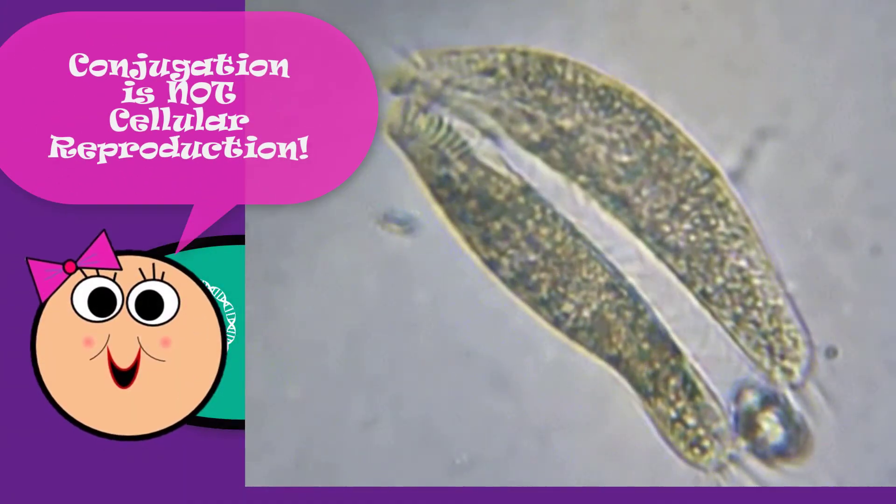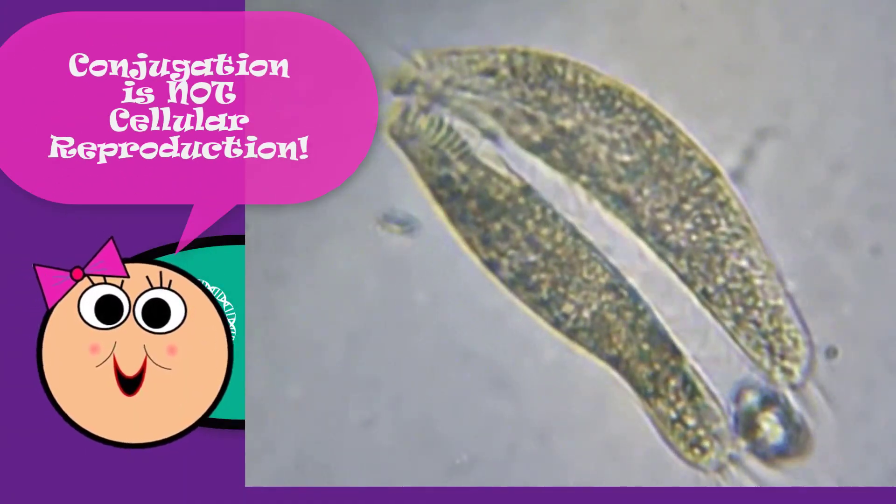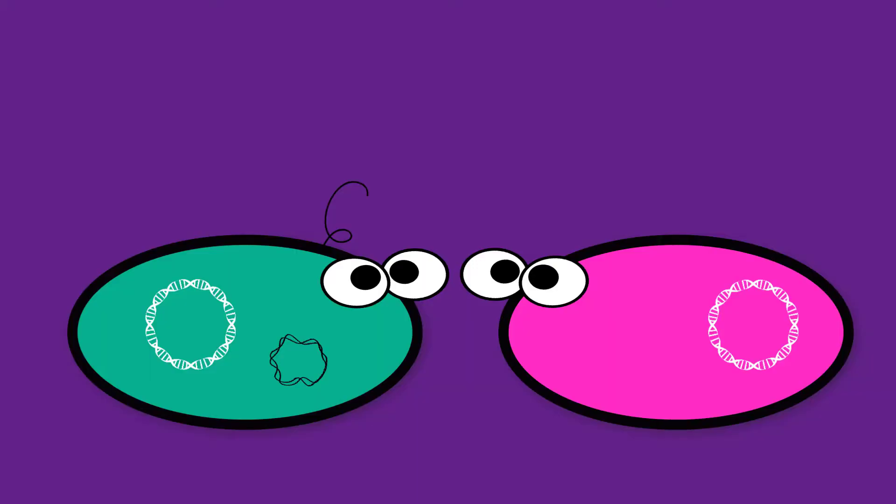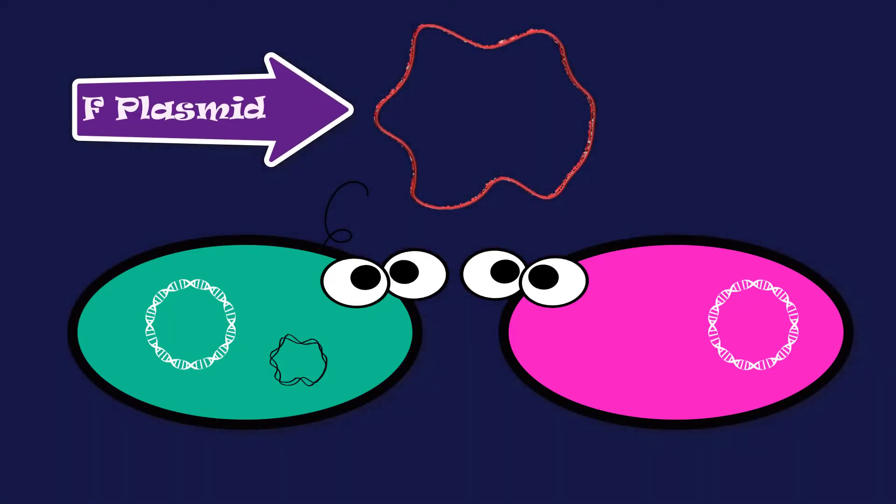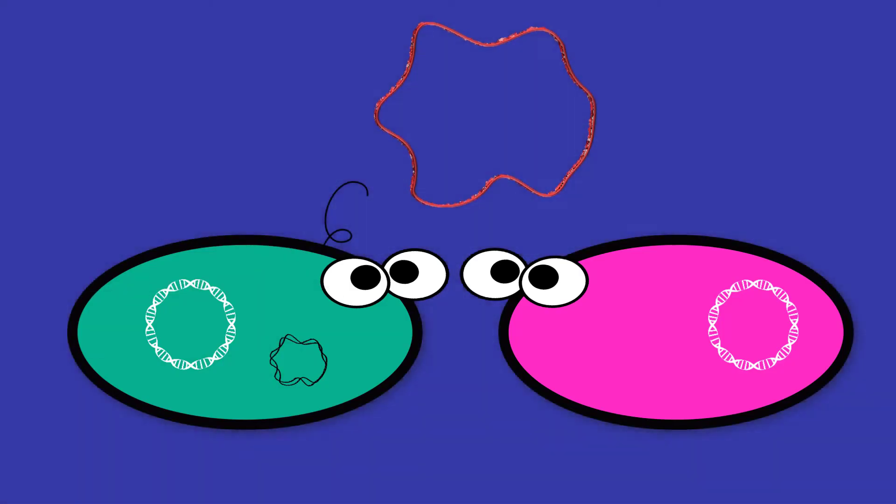Remember, this is not done as part of a reproductive process. Conjugation is made possible due to the presence of an F-plasmid. The F-plasmid is a fertility plasmid.